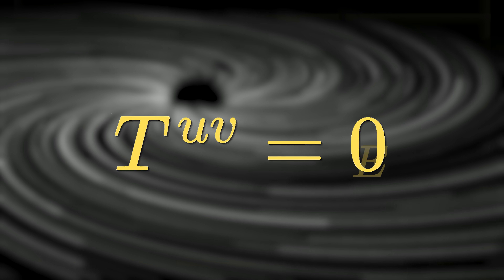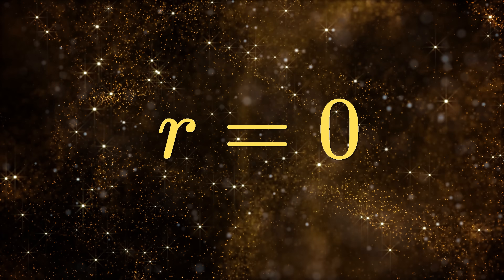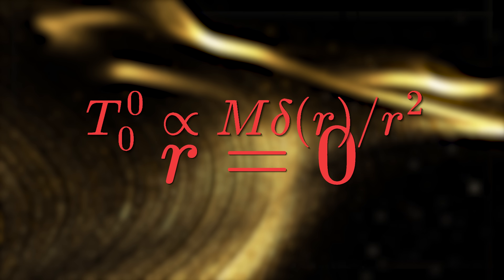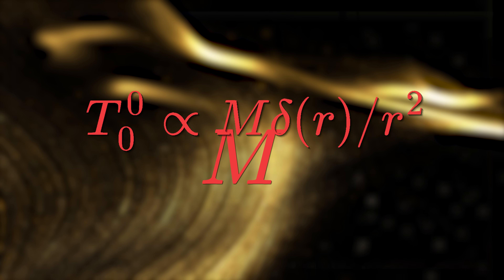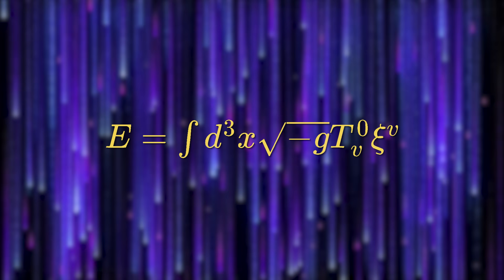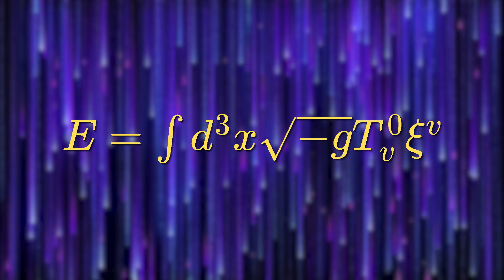Consider the Schwarzschild black hole. Textbooks often call it a vacuum solution because T equals zero everywhere — but if that were true, E would be zero. So 'vacuum solution' is somewhat of a misnomer: the Schwarzschild solution has a delta function singularity at R equals zero representing the collapsed matter source. Using the time-like Killing vector, which is Killing outside the horizon, correctly gives the black hole mass M after handling the singularity. The vacuum story is a convenience that hides the source.